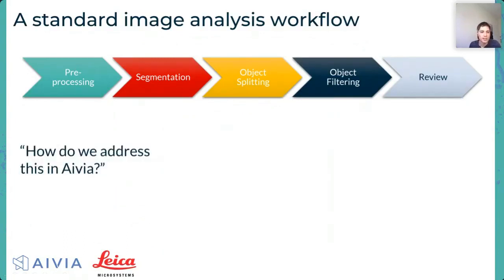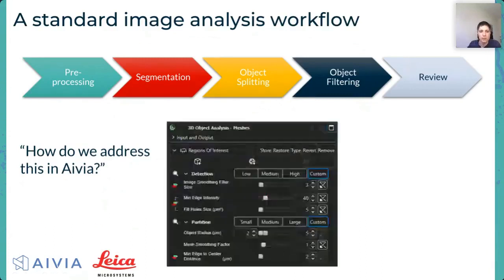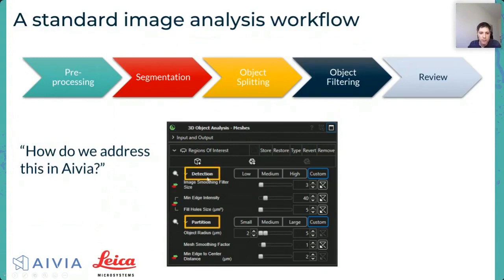AIVIA is interesting for this particular reason: it tries to address this as well as possible. The way it works is that we offer the user a single workflow — here you can see at the top it's called '3D Object Analysis,' outputting 3D meshes or spots — and within that workflow you have two different main steps like detection and partitioning.